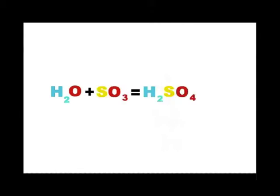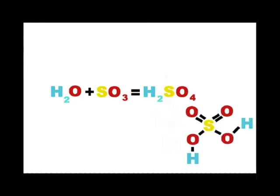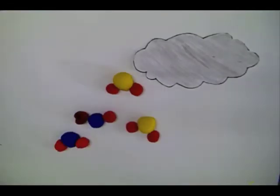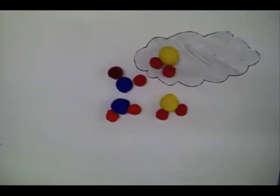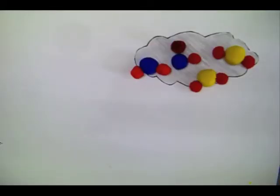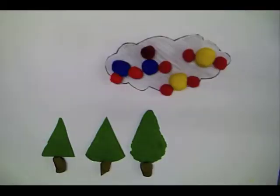Finally, sulfur trioxide dissolves in water to form sulfuric acid (H₂SO₄). After reacting with each other, these pollutants rise into the air, and it becomes acid rain and acid fog, which falls on the ground.